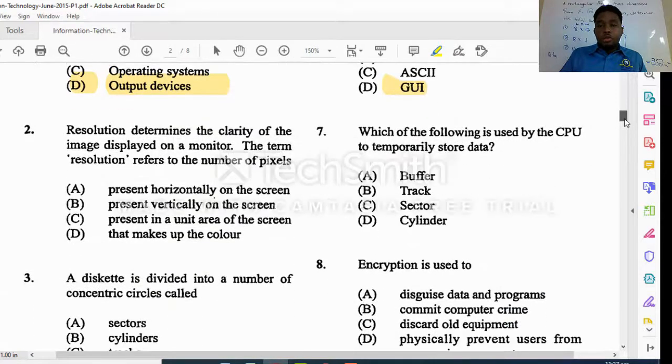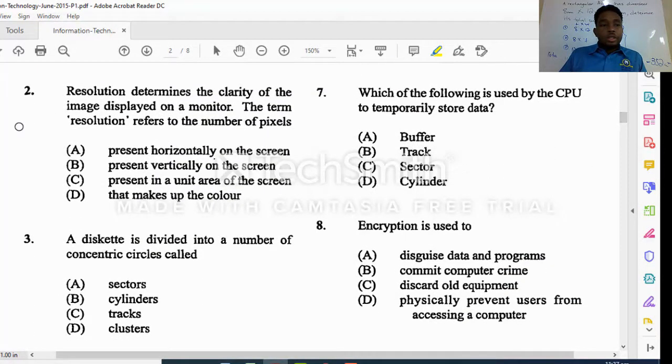Let's go down page by page. Number two says resolution determines the clarity of the image displayed on a monitor. The term resolution refers to the number of pixels present in a unit here on a screen. This is the number of pixels that forms your resolution, how clear you can see an image on your screen.